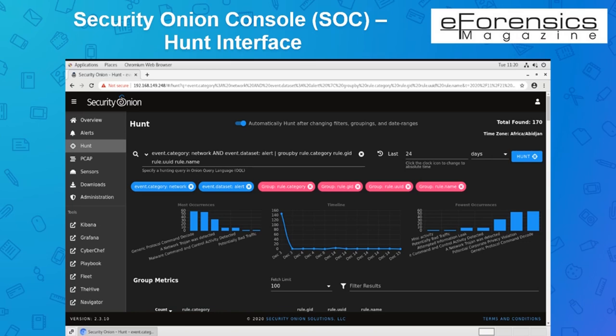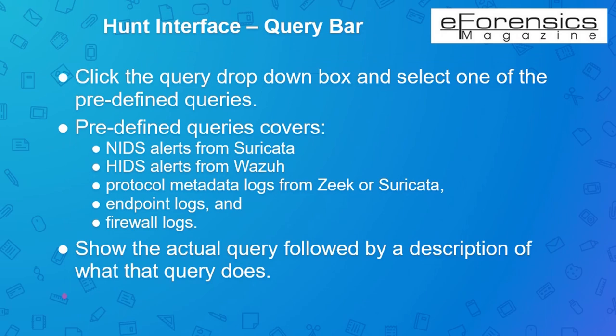You can scroll down to the IP address and group by event.module and event.dataset. You could notice Zeek events and Suricata alerts. You can pivot from the Alerts interface over to Hunt as you triage an alert. You can see Zeek events such as HTTP, file, DNS, connection log, and so on. Left-clicking the plus sign with the magnifying glass will filter only for that log. We also have a VirusTotal option — clicking it brings up the VirusTotal website with the hash preloaded. You can escalate alerts by clicking the blue escalate icon to create a case in The Hive. NIDS alerts from Suricata, HIDS alerts from Wazuh, protocol metadata from Suricata or Zeek, endpoint log information, and firewall logs are all viewable using the Hunt interface.